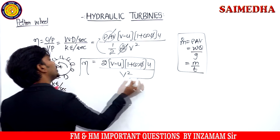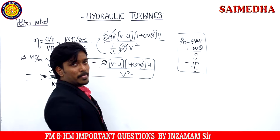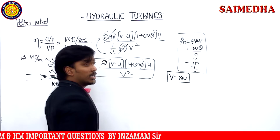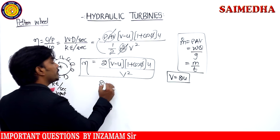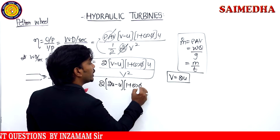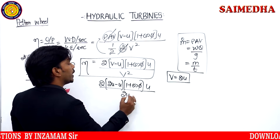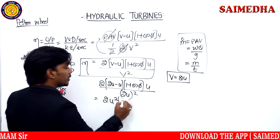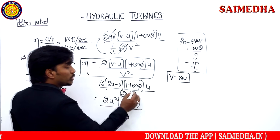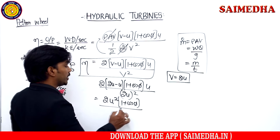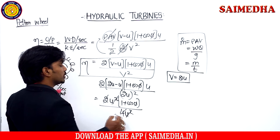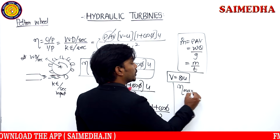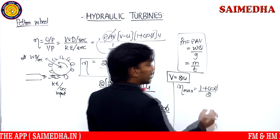The maximum efficiency condition is when V equals 2U. Substituting V equals 2U into the efficiency formula: 2(2U − U)(1 + cos φ)(U) divided by (2U)² = 2 × U × (1 + cos φ) × U divided by 4U² = 2U²(1 + cos φ) / 4U². The U² terms cancel, giving maximum efficiency equals (1 + cos φ) / 2.